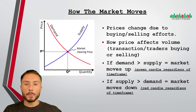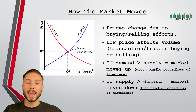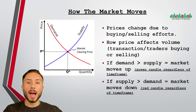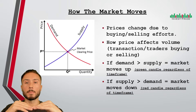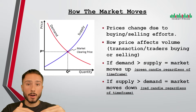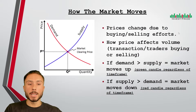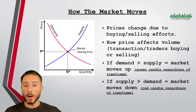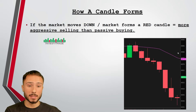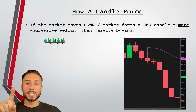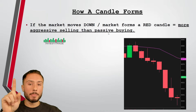Regardless of the time frame, if demand exceeds supply in that specified time, we are going to see a green candle — five minute, one minute, one hour — because what a green candle tells us is the market closed higher than where we opened. If the market moves down, we form a red candle. What that means volume-wise — no matter the time frame — if the market goes down, that means there are more aggressive sellers than there are passive buyers. If you see a move down, that means there are more traders taking liquidity away from the market than there are traders putting liquidity on the market for sale.